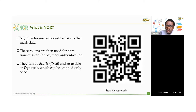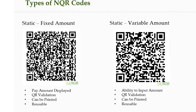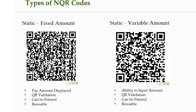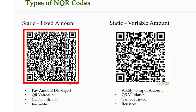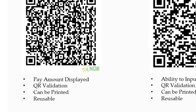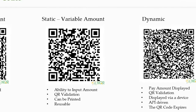There are actually two types of QR. There's a static QR and a dynamic. The static fixed amount implies that once you scan this QR image — on my left — it will return to you a fixed amount. You can't input any amount; you just complete your payment. It can be printed, it's reusable, it does the validation, and the payment amount is fixed so you can't change it. Now, static variable — and I'll give you use cases for that.